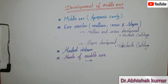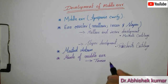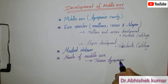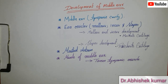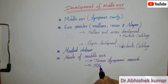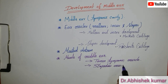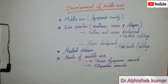Muscles of the middle ear mainly contain two muscles. The first is the tensor tympani muscle, which is attached to the upper part of the handle of the malleus. It also develops from the first pharyngeal arch, like the malleus, and is supplied by the mandibular branch of the trigeminal nerve — the nerve of the first pharyngeal arch. The second muscle is the stapedius muscle, which is attached to the stapes and develops from the second pharyngeal arch, like the stapes. It is supplied by the facial nerve, the nerve of the second pharyngeal arch.